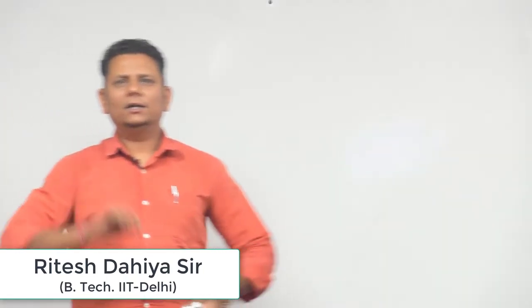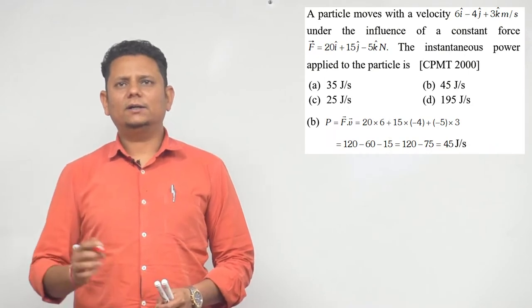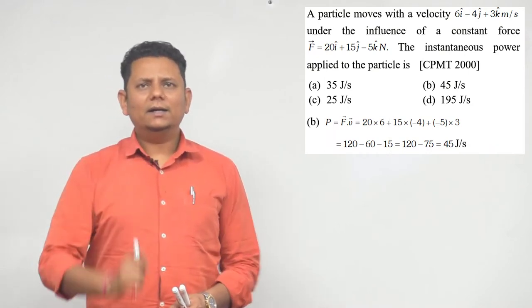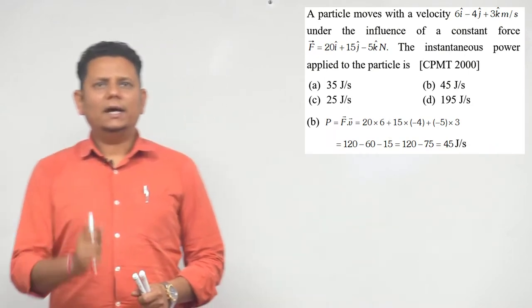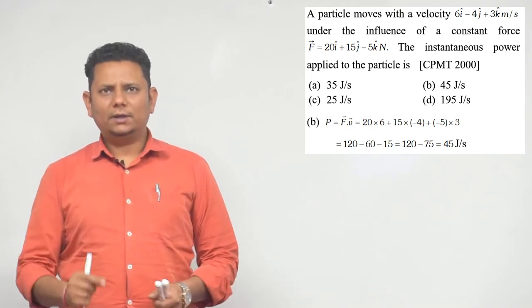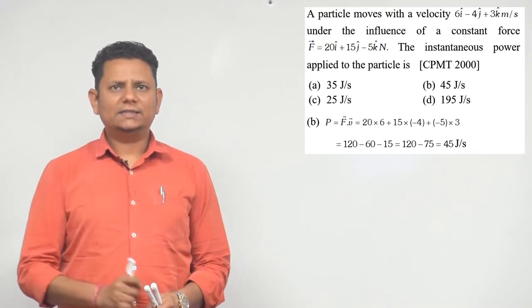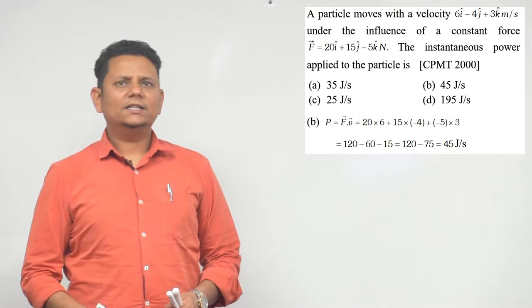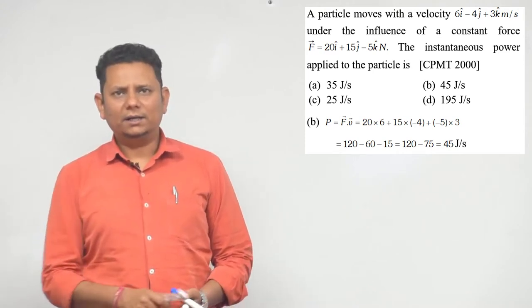Next question: A particle moves with a velocity of 6i cap minus 4j cap plus 3k meters per second under the influence of a constant force F equals 20i cap plus 15j cap minus k cap newtons. Find the instantaneous power applied to the particle.